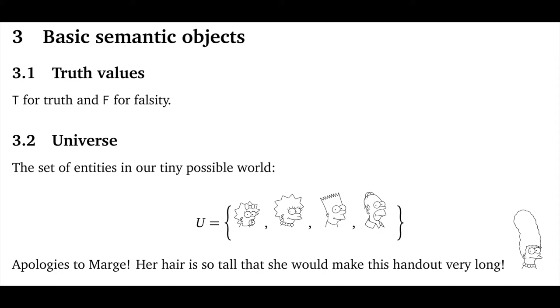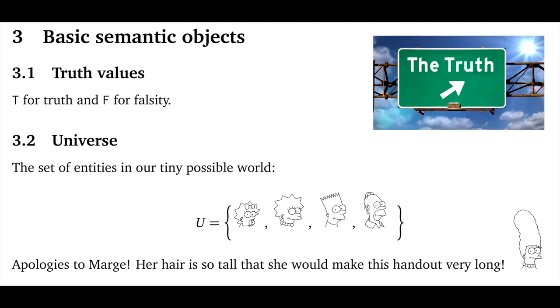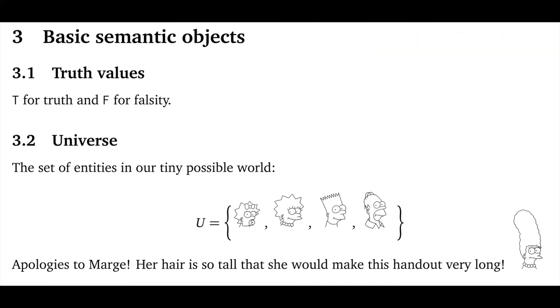This is where the rubber hits the road, so to speak, in terms of truth conditional semantics. We needn't imbue these objects with any special philosophical import right now, just think of them as making distinctions that will help us construct a small possible world.